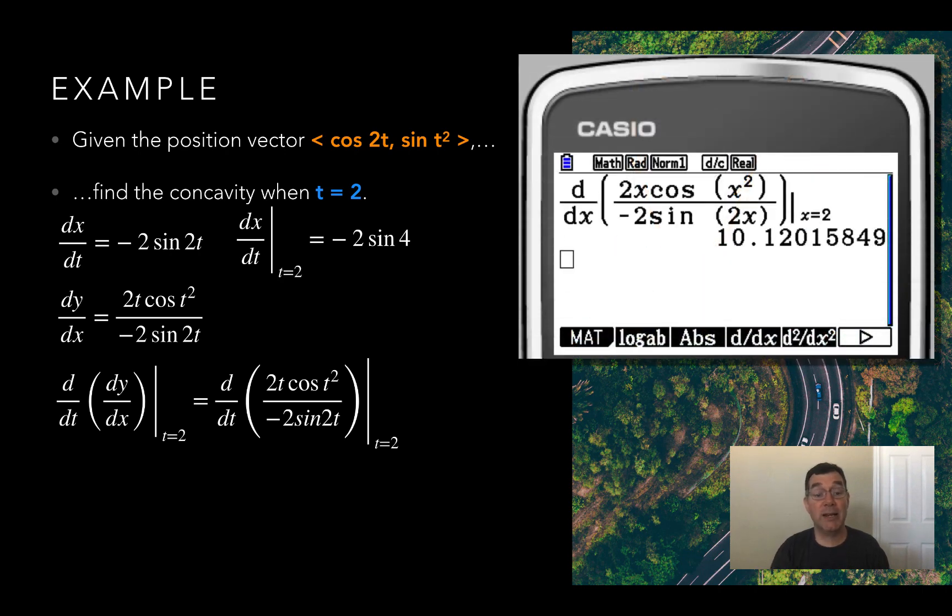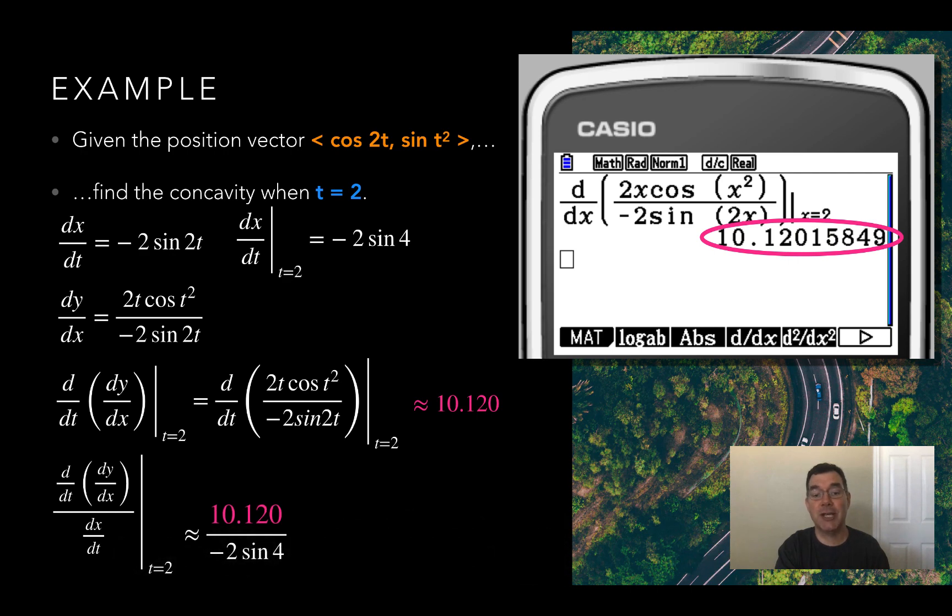Alright, so I'm not really going to figure out what the derivative of that is and then plug in 2 when a calculator can do that for me. So I've typed in the exact expression into the calculator, and I got an answer of 10.120. So remember, the second derivative, the concavity is going to be that derivative over whatever I got for dx dt, and I have that already, that's negative 2 times the sine of 4. So if I take my answer, 10.120, and divide it by negative 2 times the sine of 4, I get an answer of 6.686 approximately. So that's going to represent the concavity of my graph at time 2.